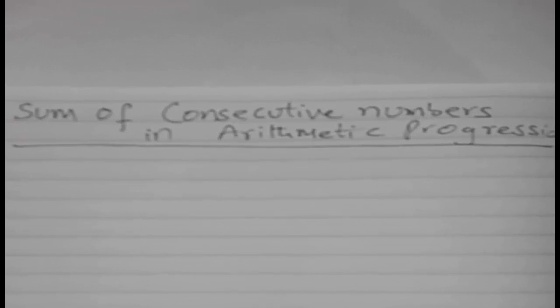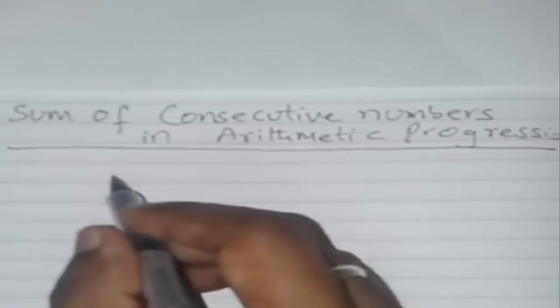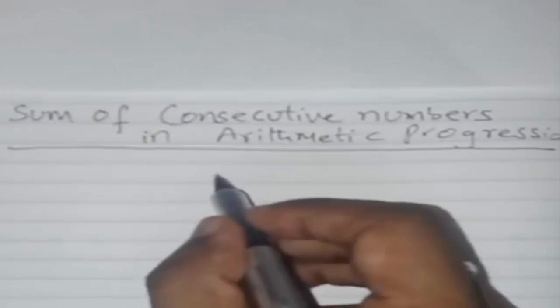Hello everyone, in this video I'm going to explain some easy and understandable tips on finding consecutive numbers or terms in arithmetic progression. In many examples, we have seen sum of three consecutive numbers of AP are taken as a minus d, a, and a plus d.